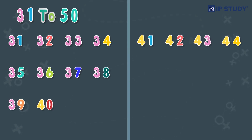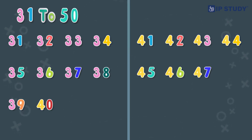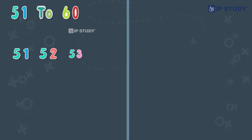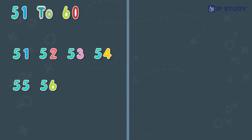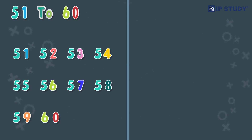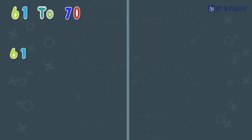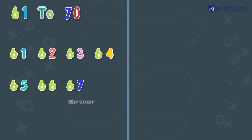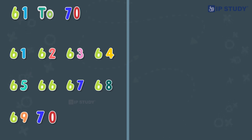From fifty-one to sixty: fifty-one, fifty-two, fifty-three, fifty-four, fifty-five, fifty-six, fifty-seven, fifty-eight, fifty-nine, sixty. Then from sixty-one to seventy: sixty-one, sixty-two, sixty-three, sixty-four, sixty-five, sixty-six, sixty-seven, sixty-eight, sixty-nine, seventy.